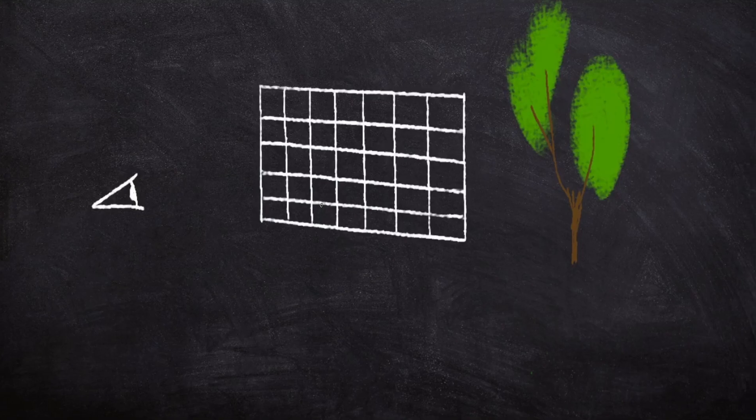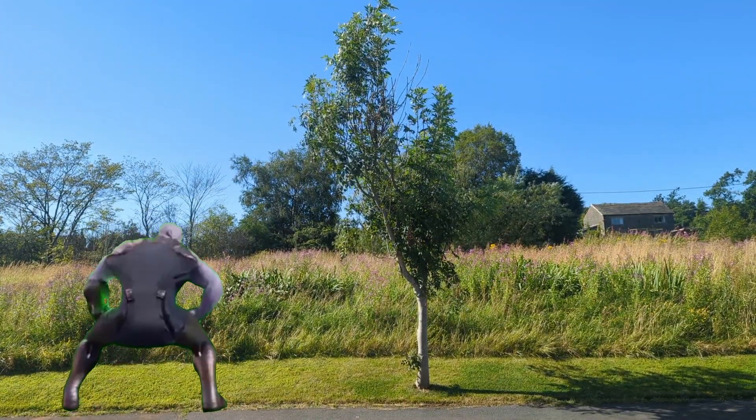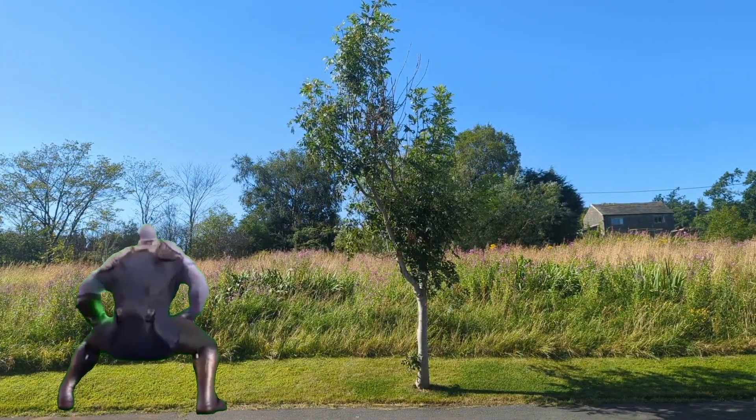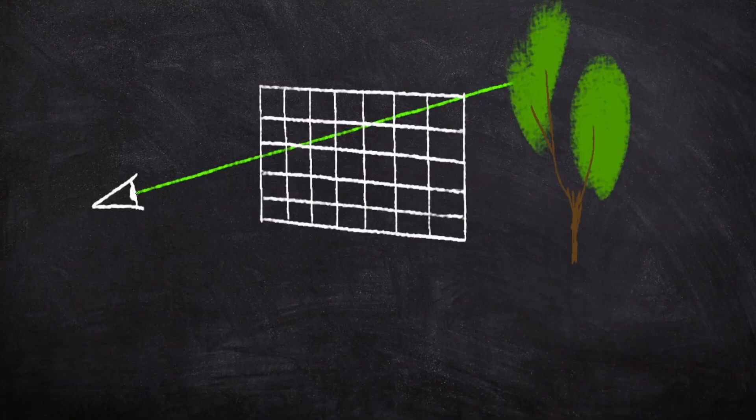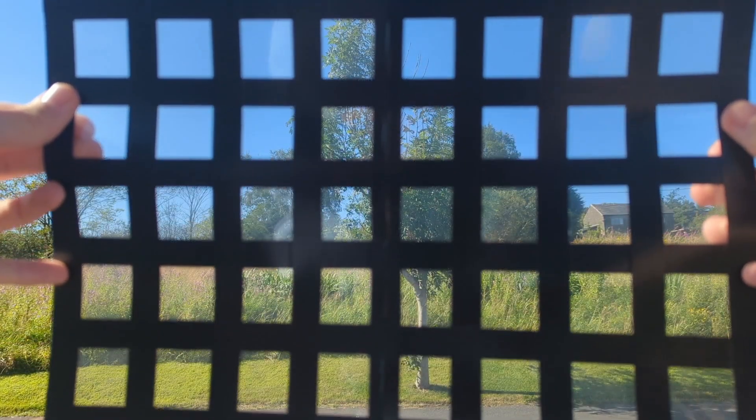Imagine you're looking out a window with a grid on it. Outside is a tree and light rays are coming from the sun, bouncing off the tree and going into your eyes through the window. Each time a light ray passes through a square, it colours that square in.